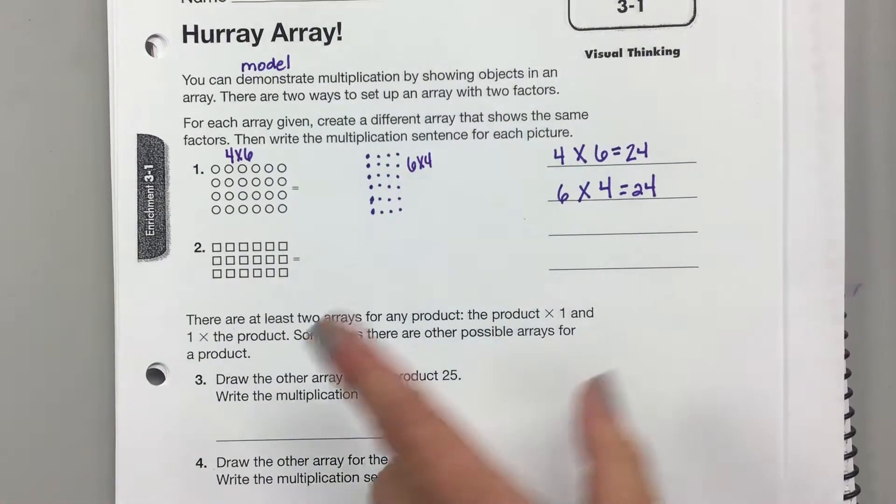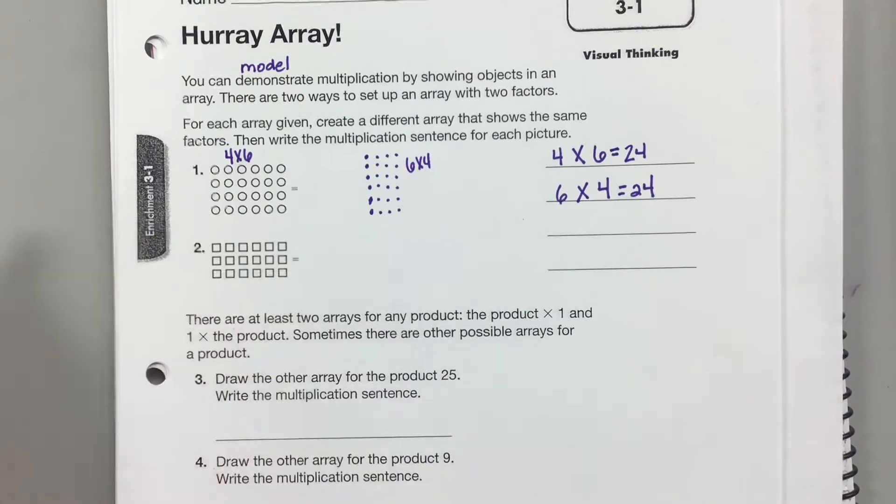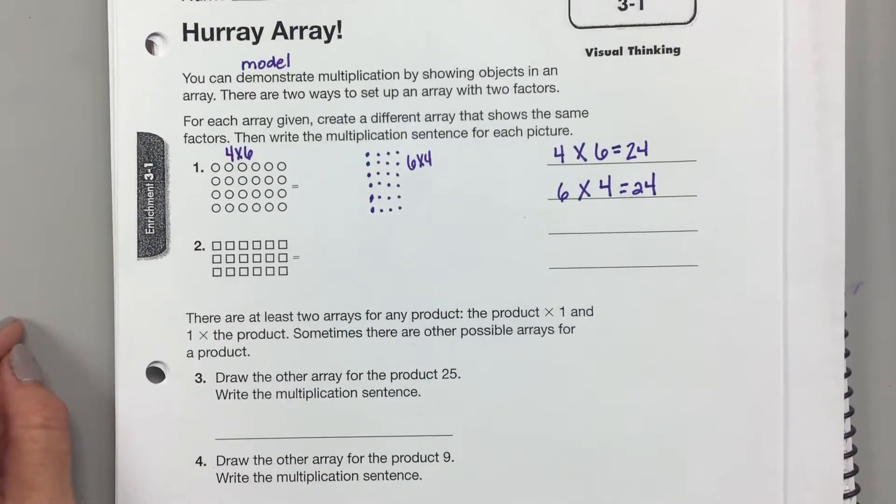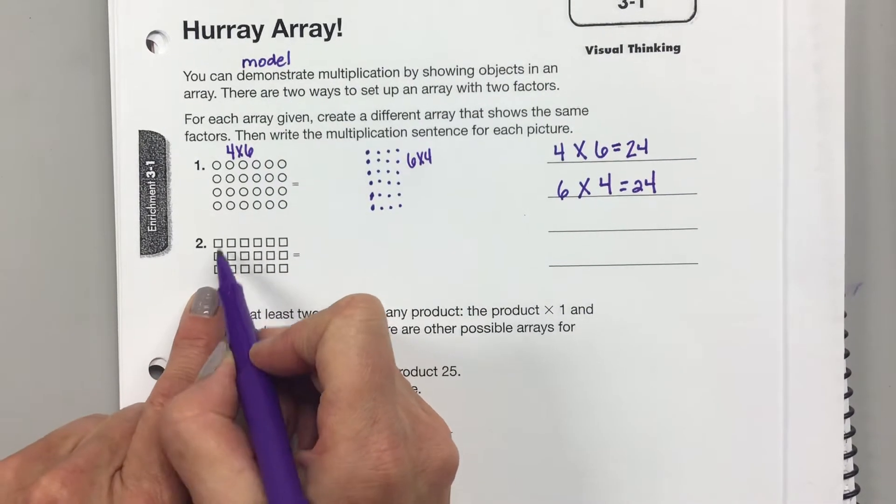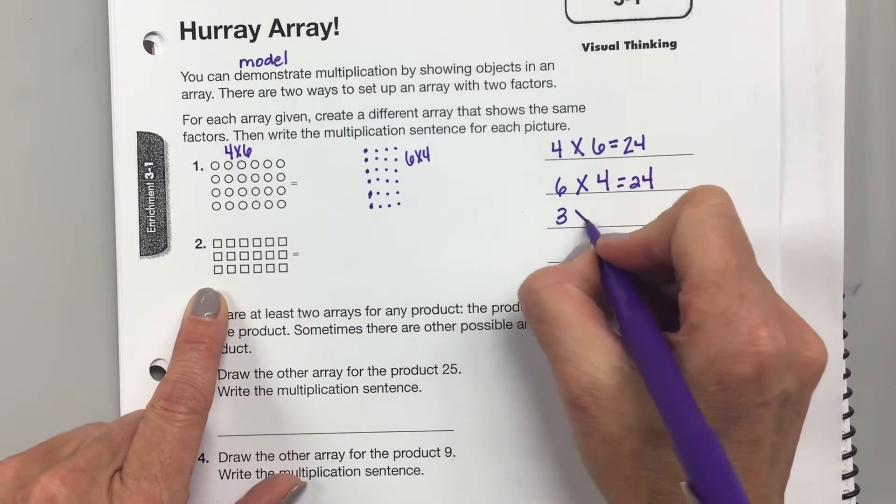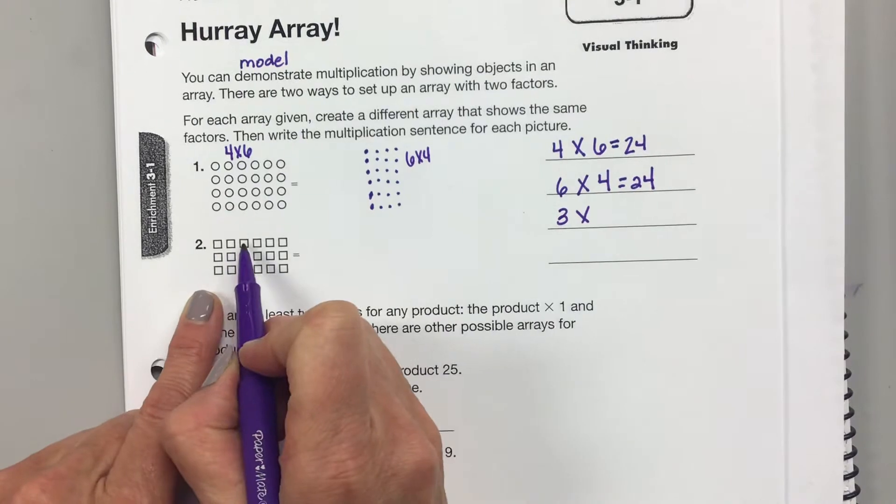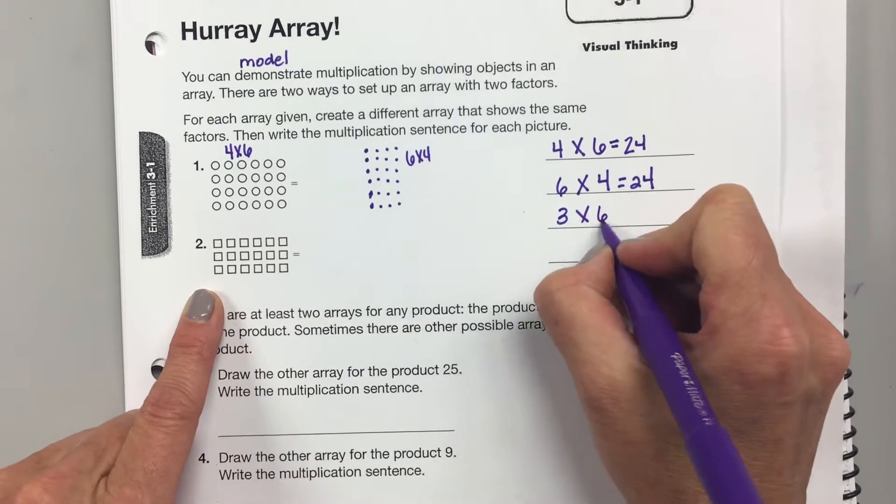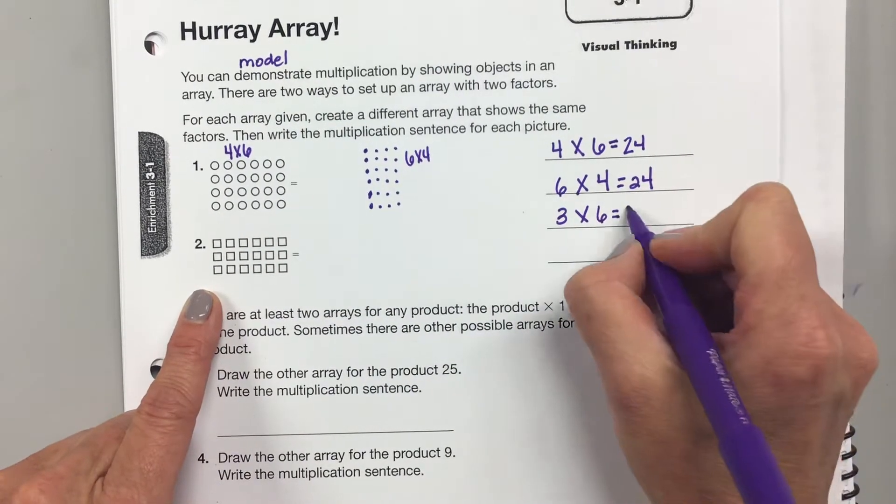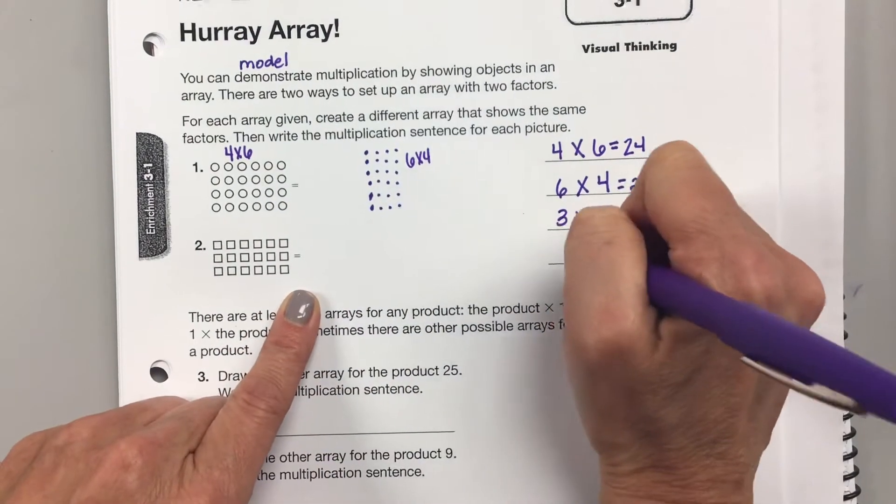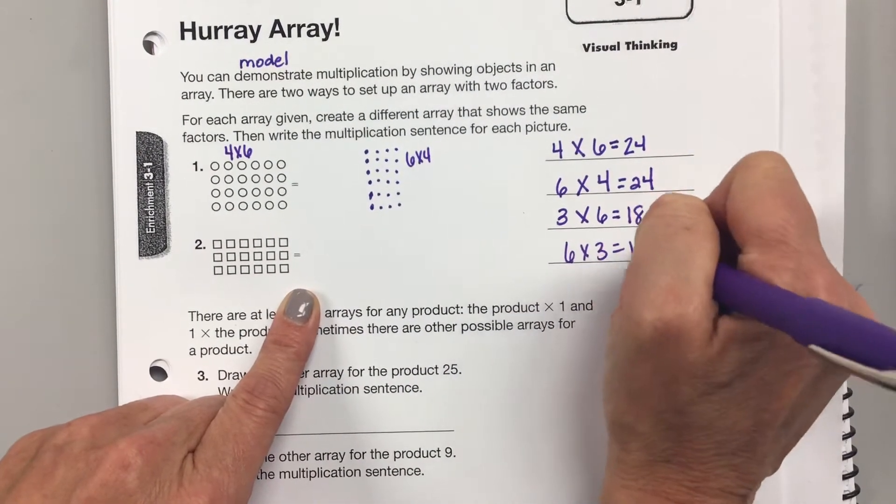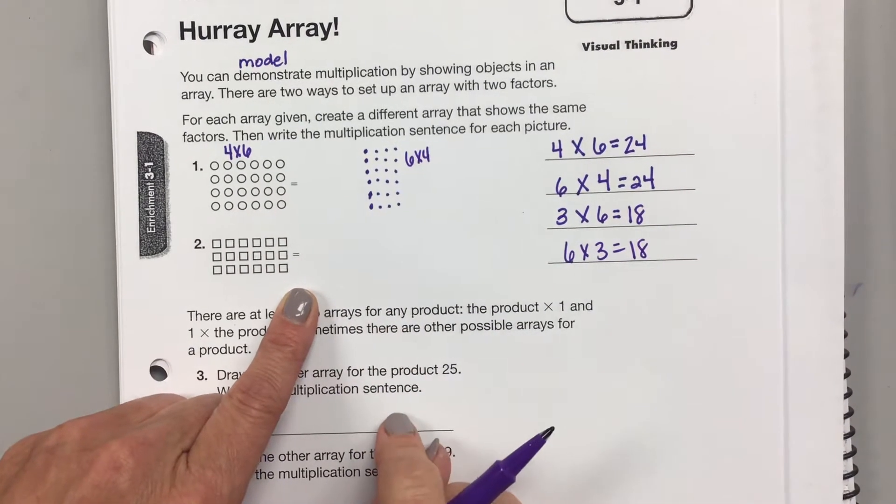Again, you have to do this correctly to be a level two on the pre-test. What is this one? How many rows? Three. Three rows of how many in each row? Six. Equals? Eighteen. So then over here, if I want to model six times three, how many rows do I need? Six. Six, I need six.